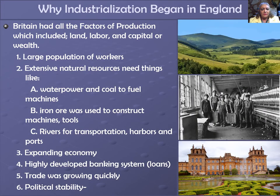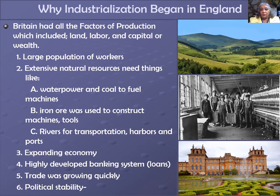So why did industrialization begin in England? In addition to a large population of workers, this small island country had extensive natural resources. To industrialize, they required natural resources such as water power to fuel new machines, iron ore to construct machines, tools, and factories, and rivers for inland transportation. They also needed harbors from which merchants could ship their products and goods to other parts of the world.